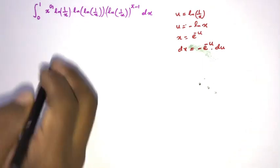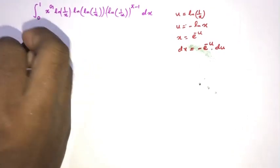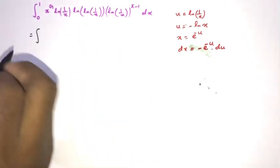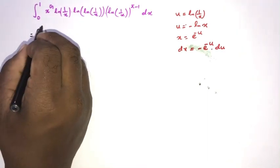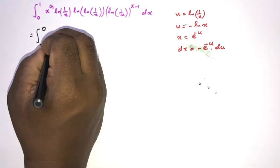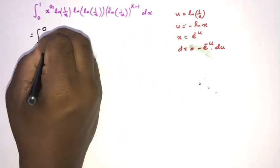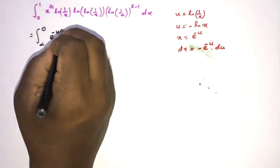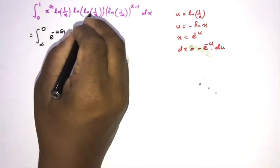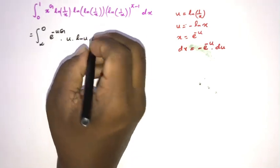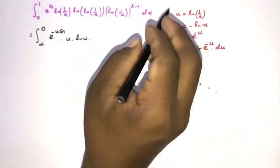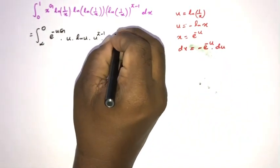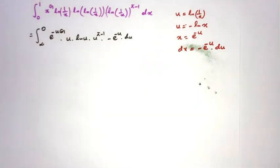Now we plug in. Our limits change: as x approaches 0, u approaches infinity; upper limit x equals 1 gives u equals 0. Substituting: e to the minus u times g, then u times natural log of u, times u to the pi minus 1, and dx gives minus e to the minus u du.